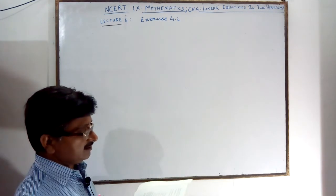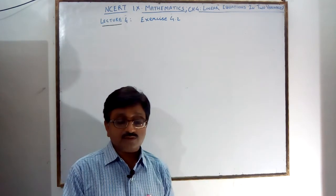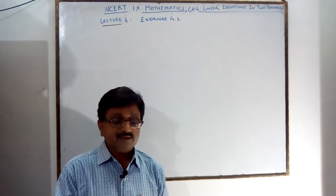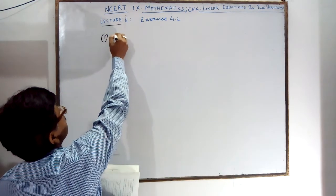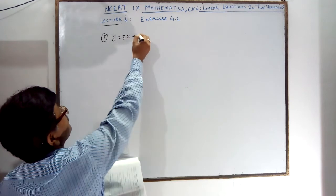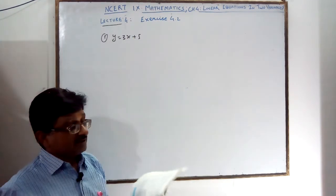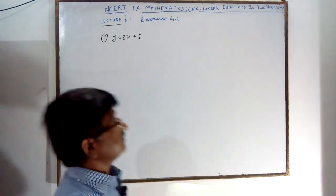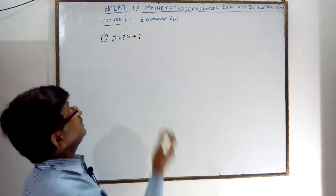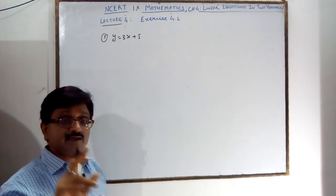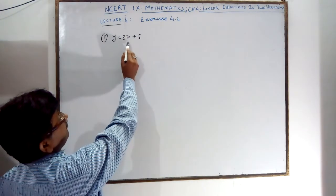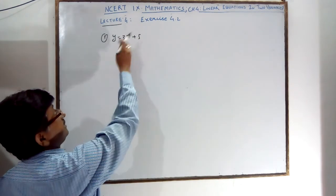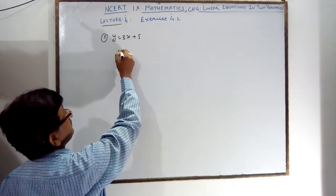In question number 1, it is asked: which one of the following options is true and why? Given y = 3x + 5. The options are: a unique solution, only 2 solutions, or infinitely many solutions. As I told you in the previous lecture, any linear equation in 2 variables will always have infinitely many solutions. Any value of x will satisfy it — if you write 0, the answer is 5; if you write 1, the answer is 8. So the third option, infinitely many solutions, is correct.